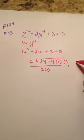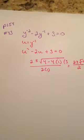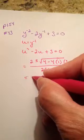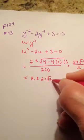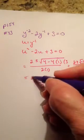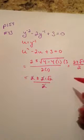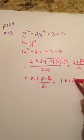That simplifies into 2 plus or minus the square root of negative 8, over 2. I can simplify that further to be 2 plus or minus 2i root 2, over 2. As long as all three terms are divisible by the same number, it's valid to simplify. So now we have 1 plus or minus i root 2.